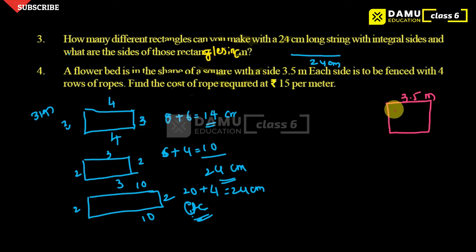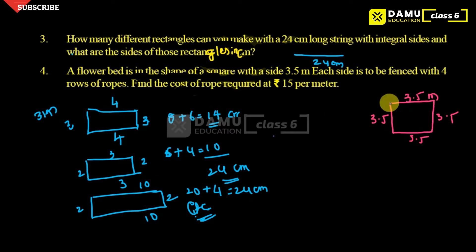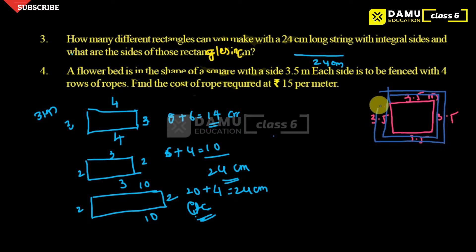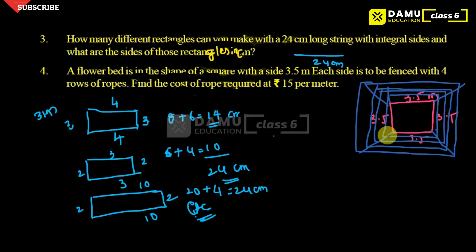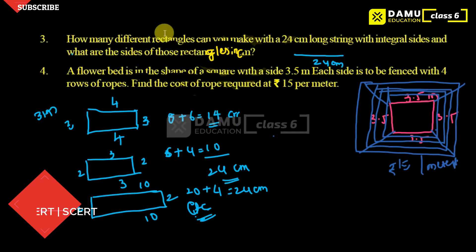Find the cost of rope required at 15 rupees per meter. So this side is 3.5, this is 3.5, this is 3.5, and this is 3.5. They fenced it all around — the surrounding fencing will be like this, four lines. Each meter costs 15 rupees, so we have to find the total cost.